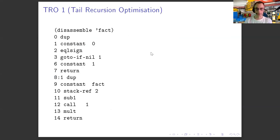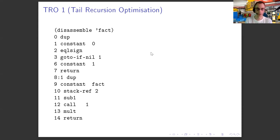So let's crack on with tail recursion. If you remember back to talk one, we divided a problem like calculating a factorial into calculating the factorial of zero and the factorial of N where N is not zero. This is the Emacs disassembly of the factorial function as it was defined — if you can see my mouse, it calls itself recursively around line 12. That's how you get the recursion, because it calls itself.